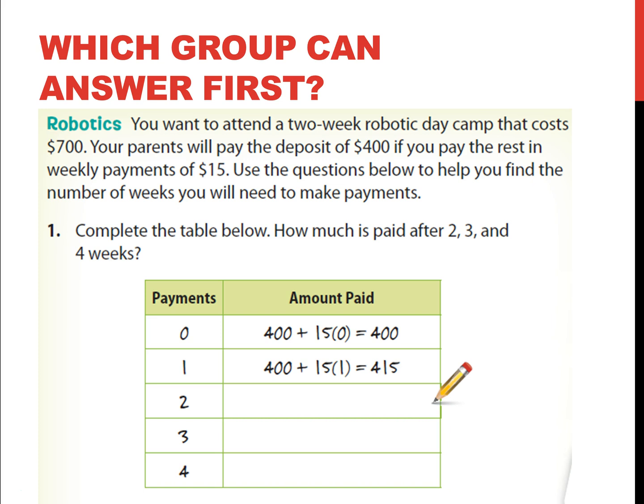You want to attend a two-week robotic day camp that costs $700. Great price. Your parents will pay the deposit of $400 if you pay the rest in weekly payments of $15. Let's use the questions below to help find the number of weeks you will need to make the payments.